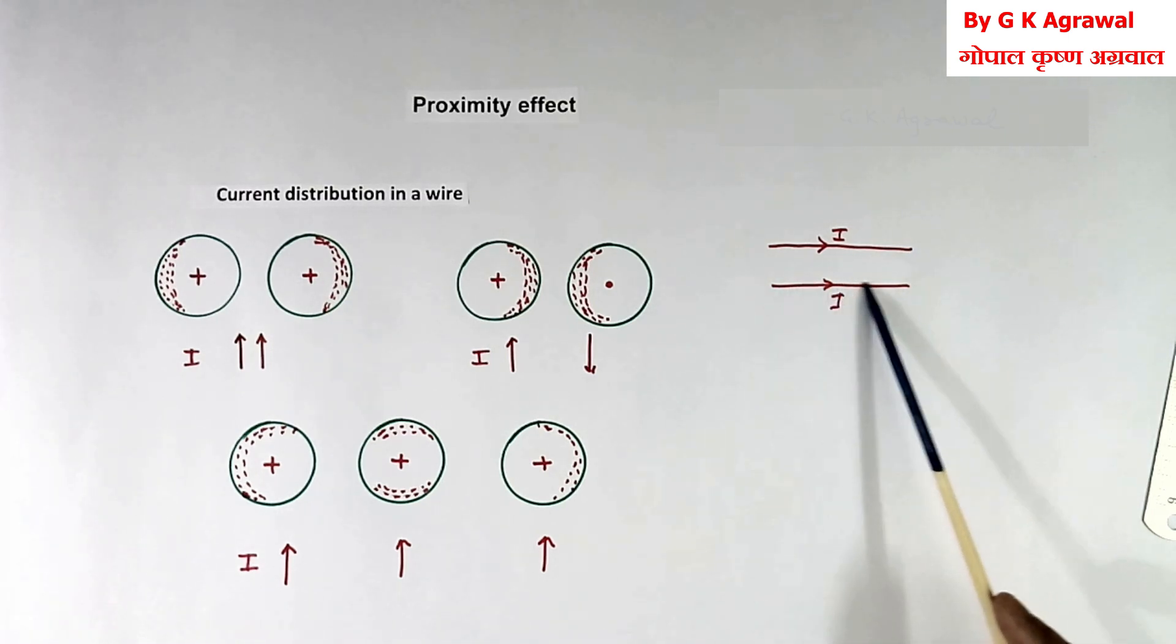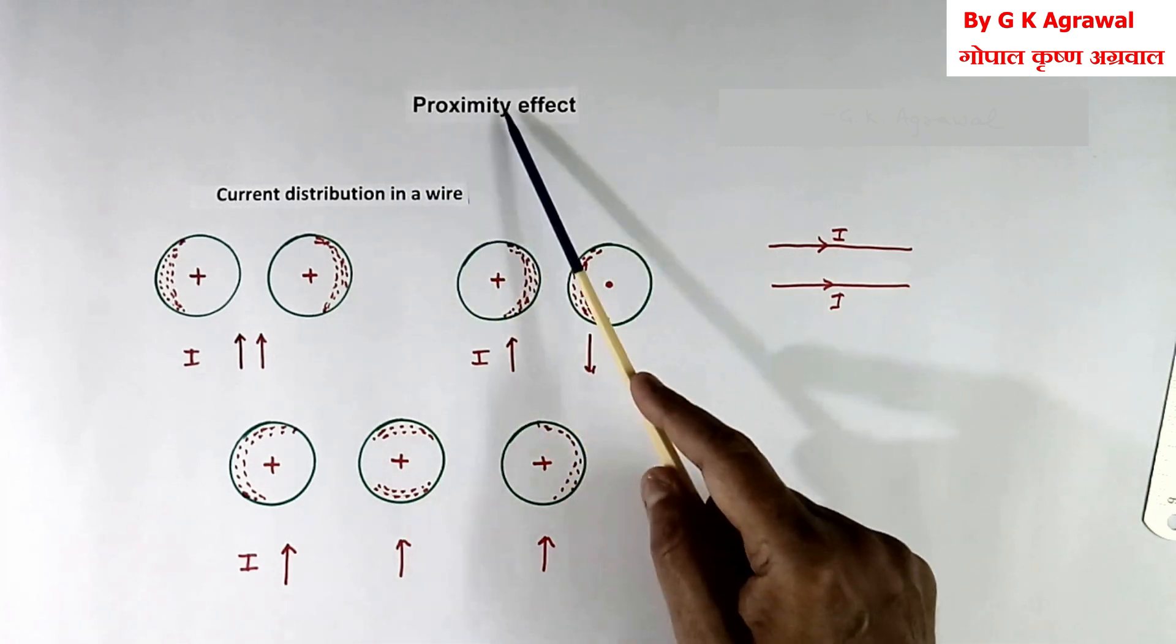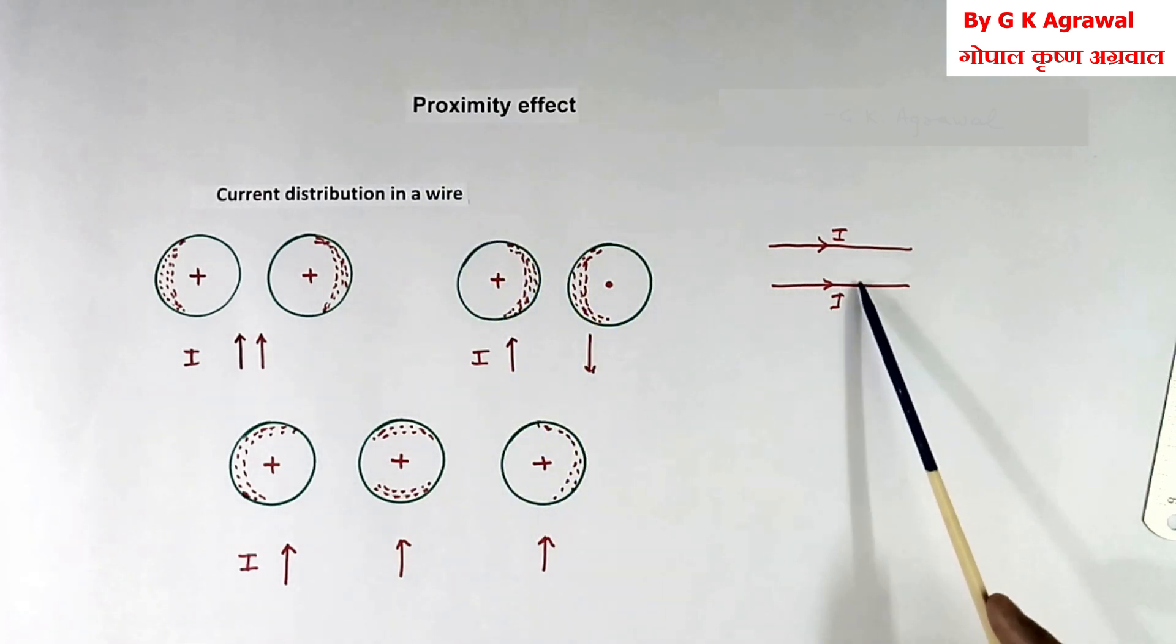So because this current is AC, this will create induced EMF in this wire because of proximity, because they are closer to each other.